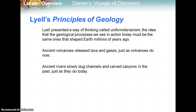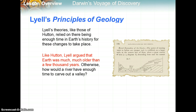The other scientist, Lyell, presented a way of thinking called uniformitarianism — the idea that the geological processes we see in action today must be the same ones that shaped Earth millions of years ago. Ancient volcanoes released lava and gases just as volcanoes do now. Ancient rivers slowly dug channels and carved canyons in the past just as they do today. Lyell's ideas, like those of Hutton, relied on there being enough time in Earth's history for those changes to take place. Like Hutton, Lyell argued that Earth was much older than a few thousand years — otherwise, how would a river have enough time to carve out a valley?